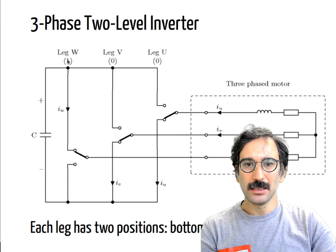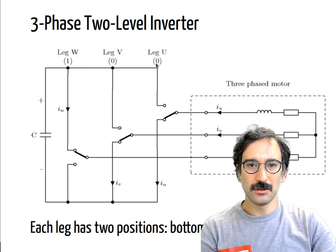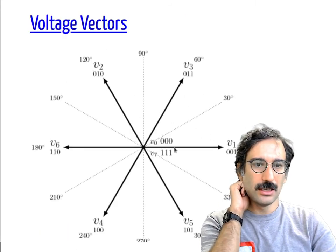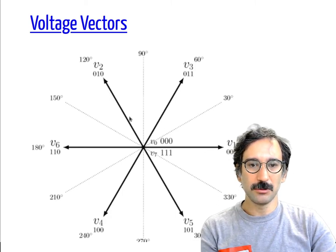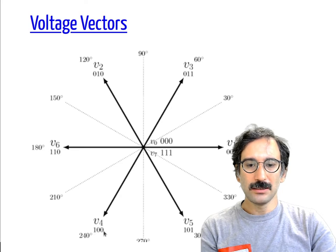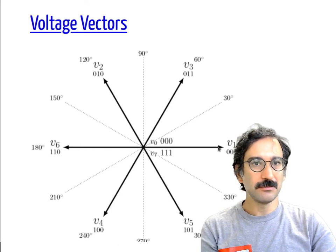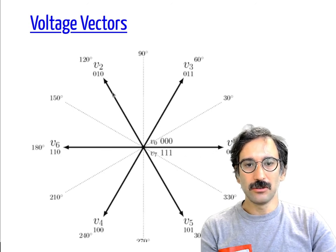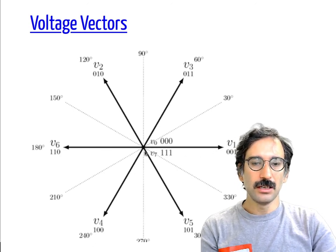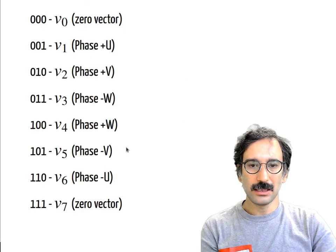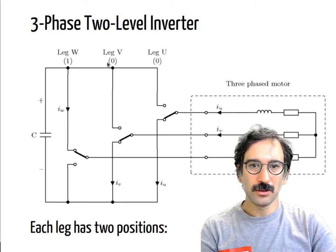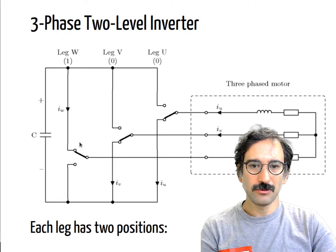Similarly, I can apply zero-one-zero or one-zero-zero. At zero-one-zero, the MMF direction is 120 degrees away. To get the reverse MMF direction of zero-zero-one, instead of applying zero-zero-one you apply one-one-zero: both phase B and phase C are connected to positive, so they will each have plus I over two, while only phase A is connected to the bottom position.